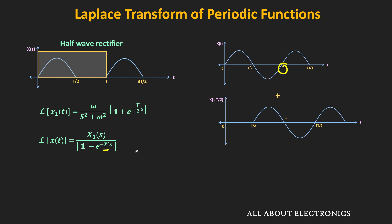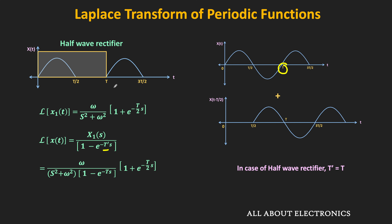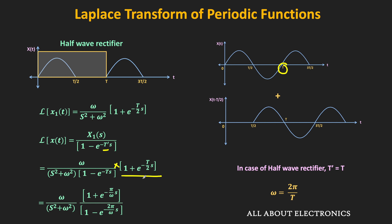For the half wave rectifier, the time period T' equals T. So the Laplace transform of x(t) equals ω/(s² + ω²) times (1 plus e^(-Ts/2)) divided by (1 minus e^(-Ts)). If we want to express the same in terms of ω, since ω equals 2π/T, we have T equals 2π/ω and T/2 equals π/ω. That is the Laplace transform of the half wave rectifier function.